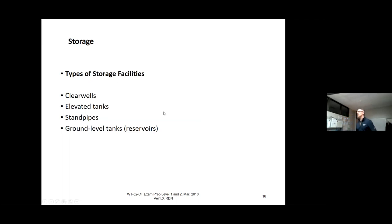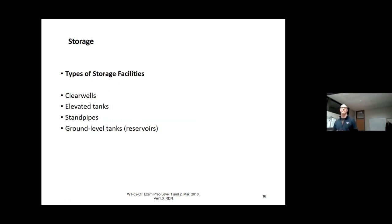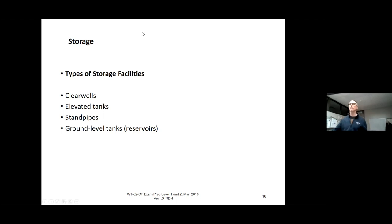There are a number of different types of storage facilities, largely dictated by where you are in the world. Clear wells are usually at the treatment plant — that's your first tank, and a lot of times the clear well water is used for backwash for the filter system. You also have elevated tanks — if you live in a very flat area, you're going to end up with those. If it's flat there's no gravity, so you need to get the water up high to feed down.